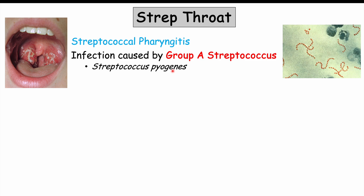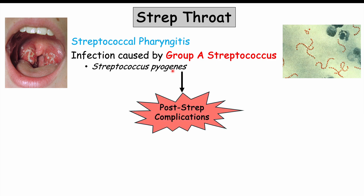Even when a patient has had strep throat and achieved resolution, they can develop post-streptococcal complications, including rheumatic fever and post-streptococcal glomerulonephritis, which affects the kidneys. This is why we want to detect and treat strep throat promptly. The problem is that strep throat can look like other upper respiratory tract infections, such as viral infections, so this lesson will help us distinguish whether a patient is more likely to have strep throat or not.